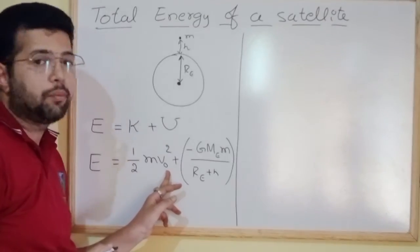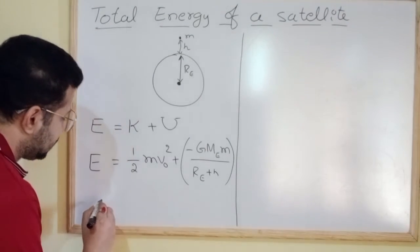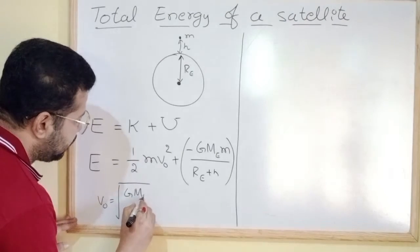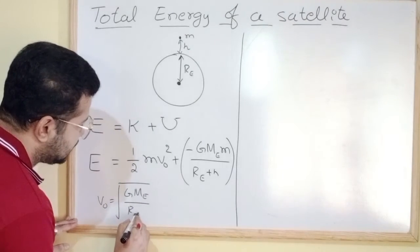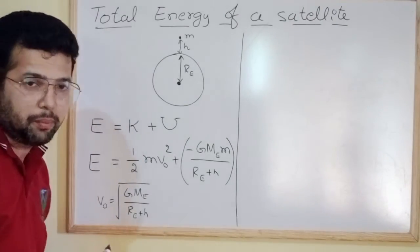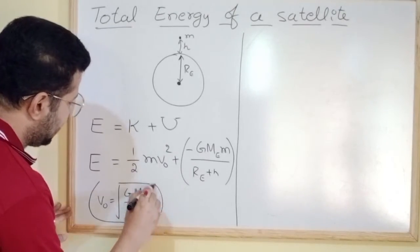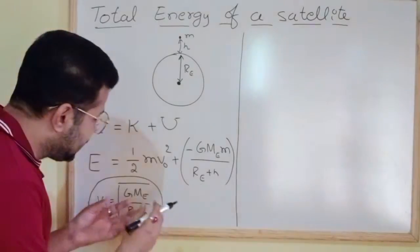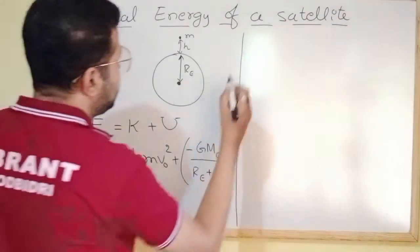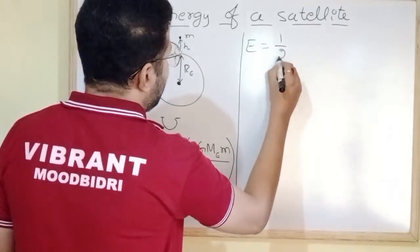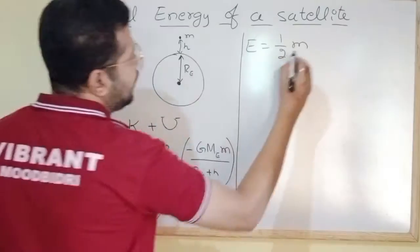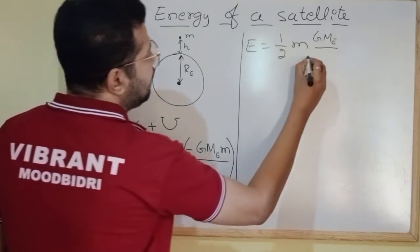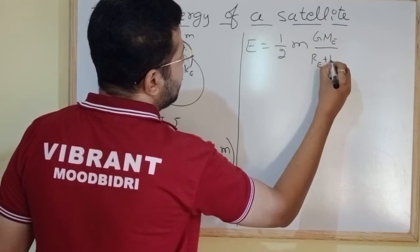Now we will make a substitution for orbital velocity. We know that orbital velocity V_O is equal to the square root of G times M_E divided by (R_E plus h). We will substitute this here. V_O squared means the square root goes, so total energy equals half times M times G times M_E divided by (R_E plus h), minus G times M_E times M divided by (R_E plus h).